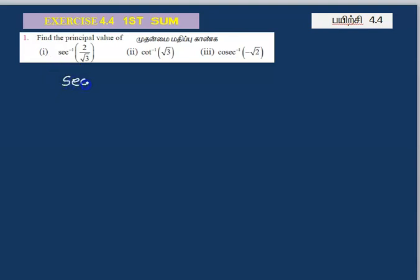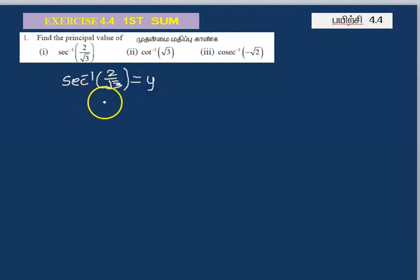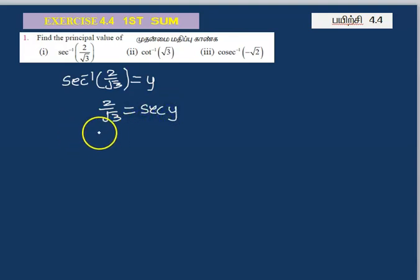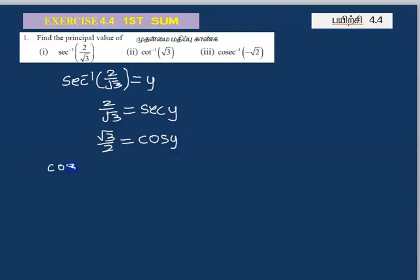Second inverse of 2 by root 3 is equal to y. So 2 by root 3 equals secant y. Secant y — to find the function, root 3 by 2 is the secant reciprocal, which is cosine y. Cosine y equals root 3 by 2.